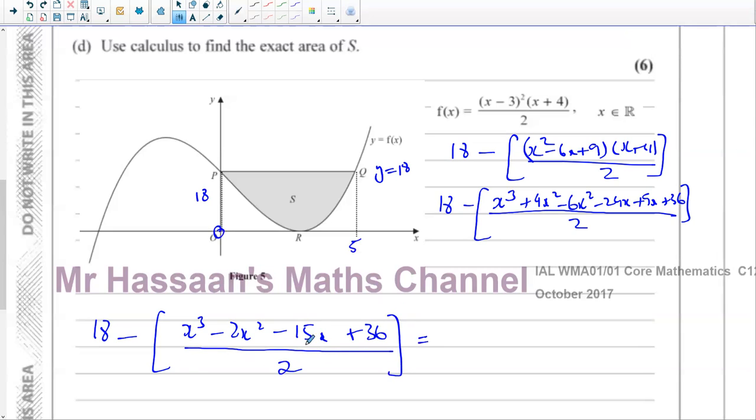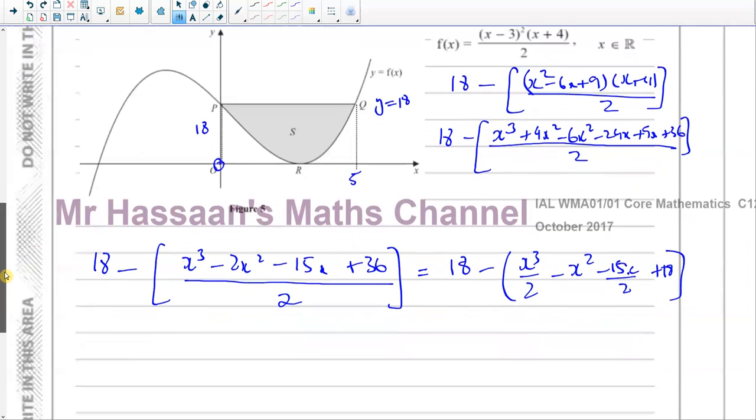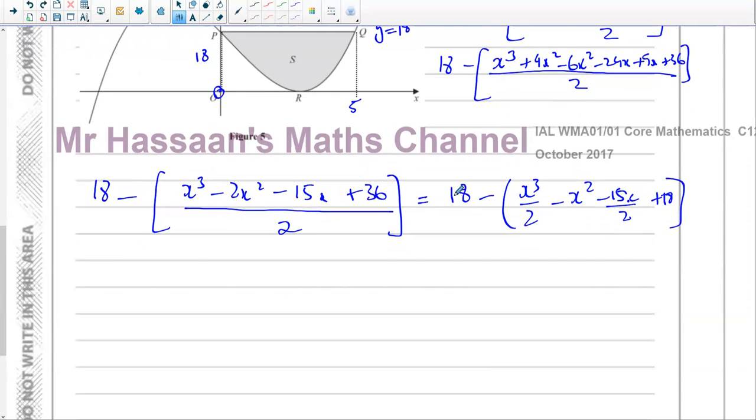And this is all over 2. Now let me just separate these into separate terms. You've got 18 minus, and you're going to have x cubed over 2, minus x squared, minus 15x over 2, and plus 18. Now if you now expand this bracket and include the 18, you're going to have 18 minus 18. So the 18 will disappear, but all of these signs will change because there's a minus sign. So you've got minus x cubed over 2 plus x squared and plus 15x over 2.